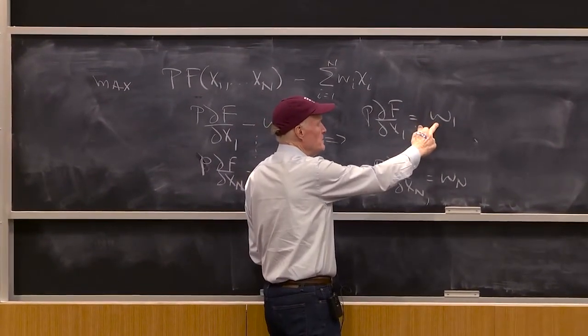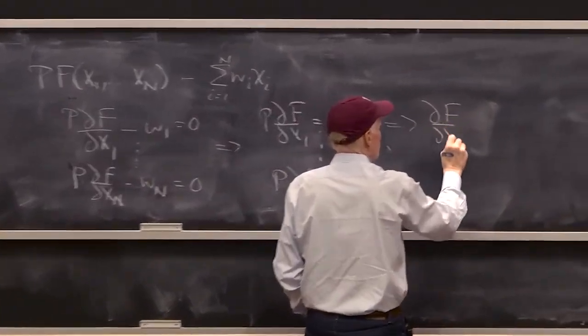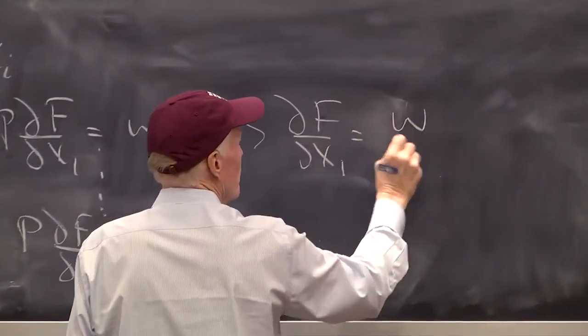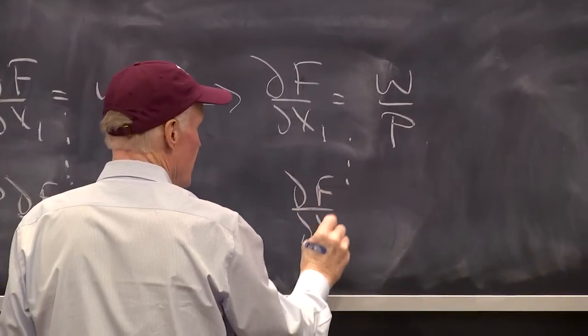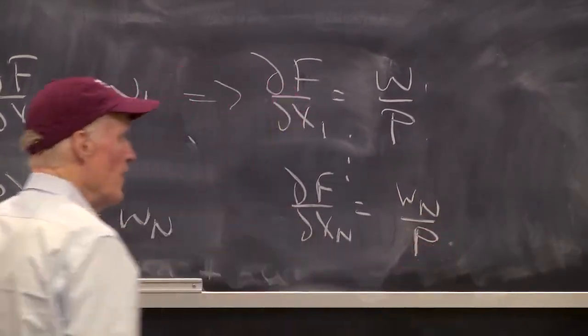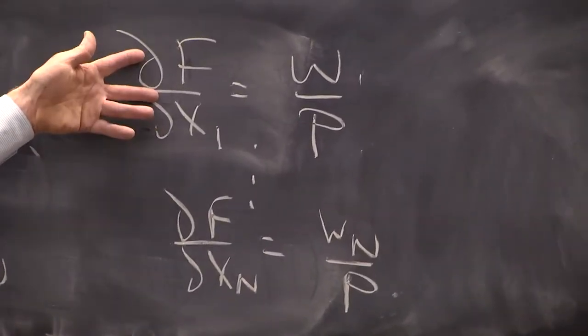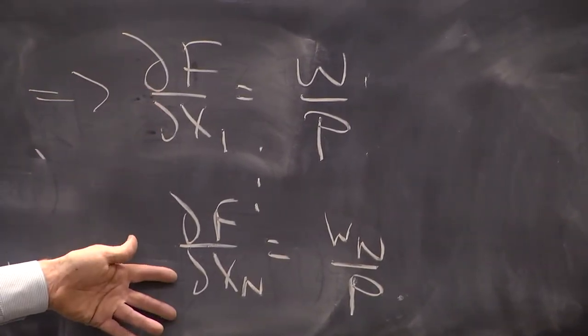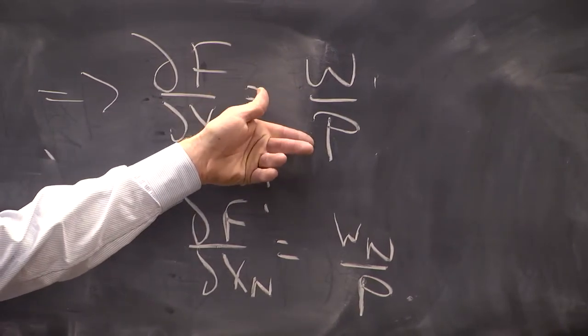W is the price of inputs. So this implies partial f, partial x1, equals w over p, down to partial f, partial xn, equals wn over p. So that would look just like the first order conditions we had before. These were like marginal utilities, except we have a 1 over p in place of lambda.